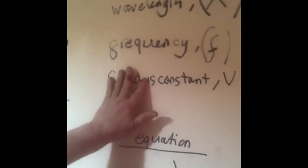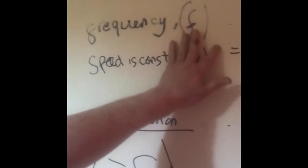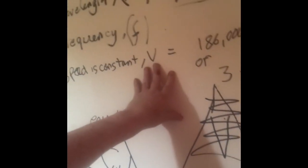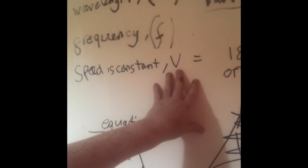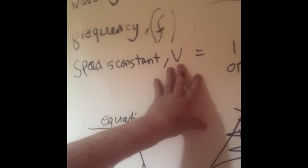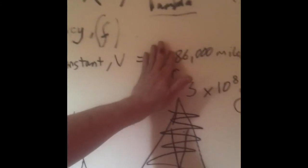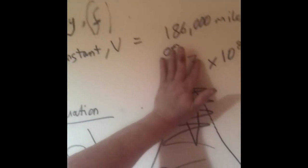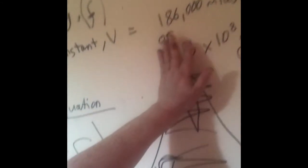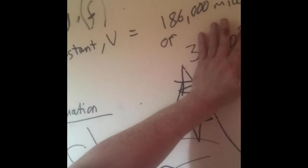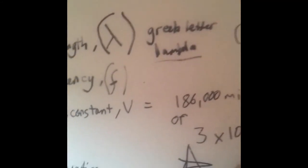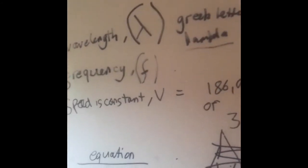Now, the speed of a wave is constant, and that's V for velocity, speed. And that equals, in the electromagnetic spectrum, or the electromagnetic radiation spectrum, including visible light, and everything I've been talking about, 186,000 miles per second, or 3 times 10 to the 8, that's 3 with 8 zeros after it, meters per second. The V minus 1 just means per second, meters per second.